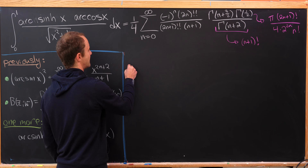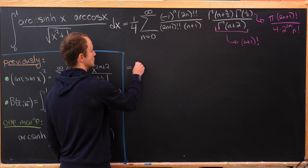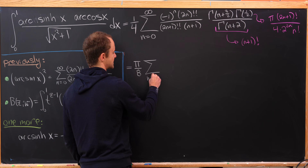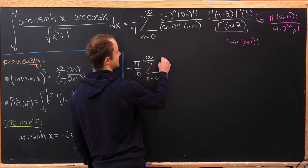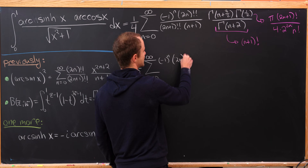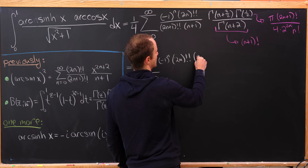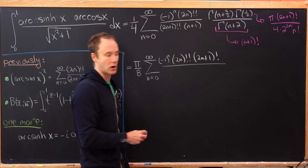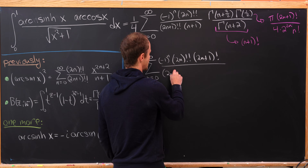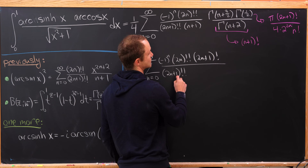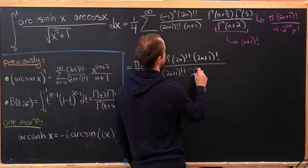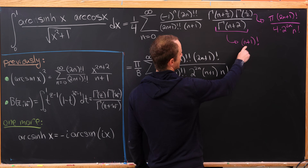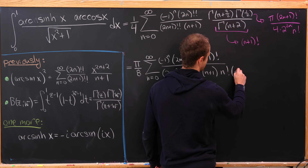Putting those into the sum leaves us with pi over 8 times the sum as n goes from 0 to infinity of: minus 1 to the n, times (2n)!! times (2n+1)!, all over (2n+1)!! times 2 to the 2n times (n+1) times n! times (n+1)!.